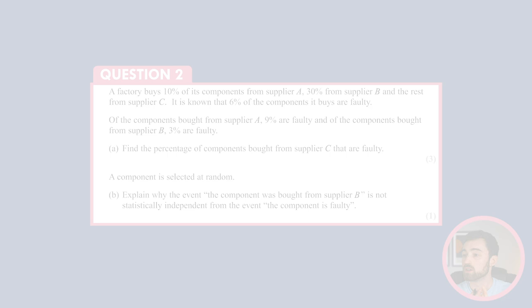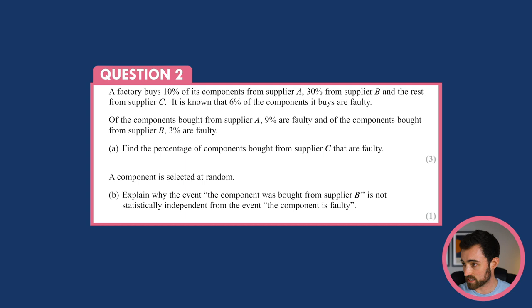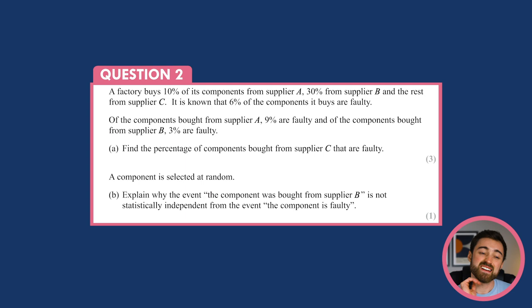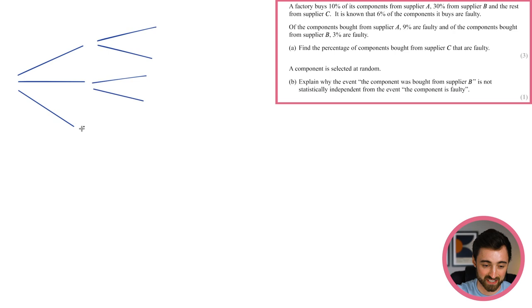Question two. A factory buys 10% of its components from supplier A, 30% from B, and the rest from supplier C. 6% of all components are faulty. Of those from supplier A, 9% are faulty; from supplier B, 3% are faulty. Find the percentage from supplier C that are faulty. This is a tree diagram question — we have two variables: which supplier, and whether it's faulty or not.